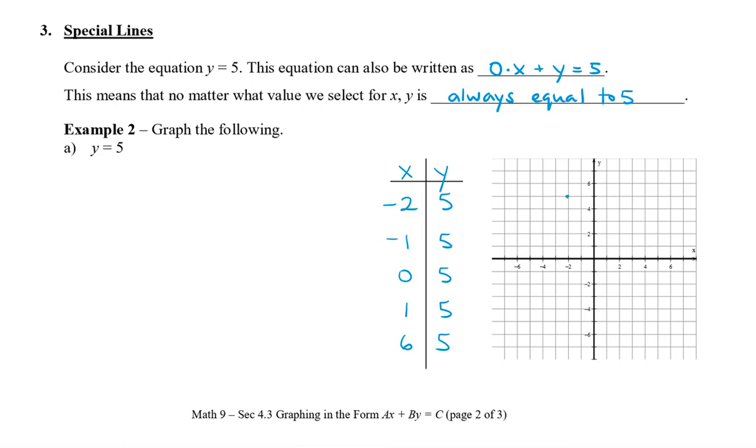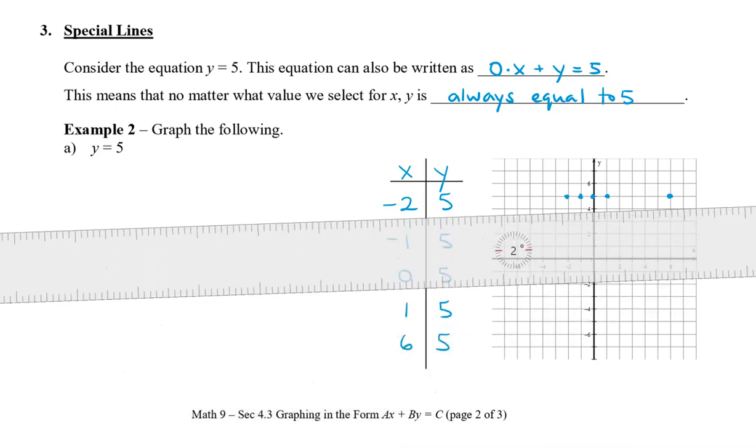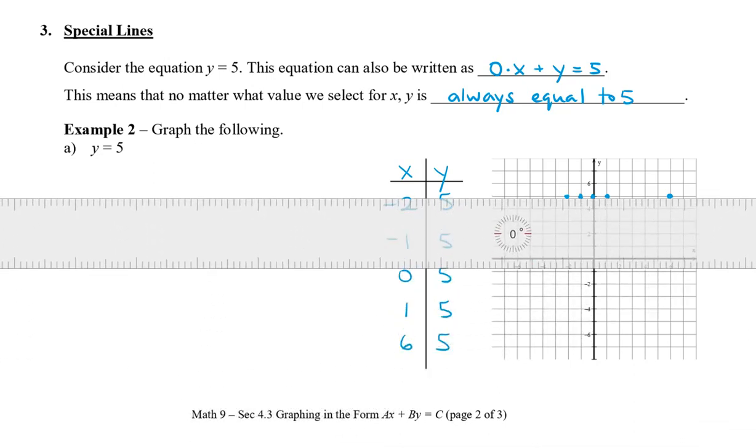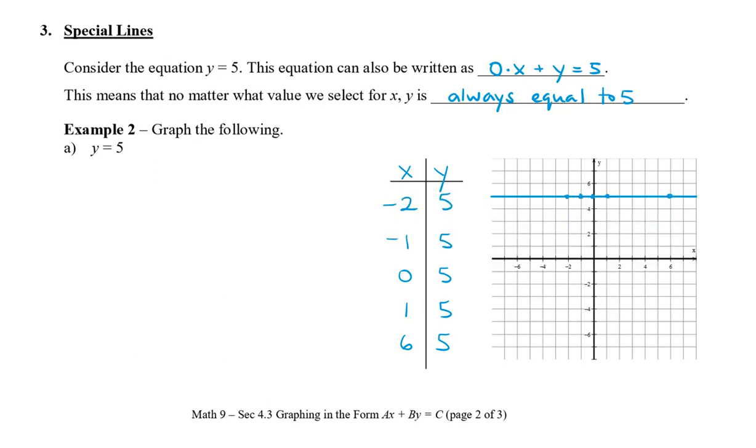So, plotting these numbers onto my grid, negative 2 and 5, negative 1 and 5, 0 and 5, 1 and 5, even 6 and 5, we can see that all of these points lie on a horizontal straight line. So, we can connect all of these points with my ruler lined up. And then, we draw arrows on the end. So, that means when y equals 5, we get a horizontal line.